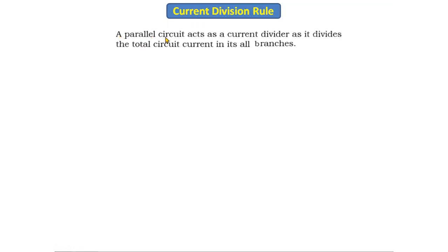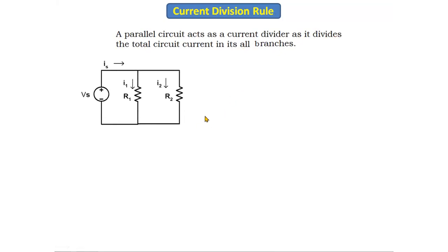Hello everyone, today we are going to discuss the current division rule. This rule is used to find out the currents which are dividing in a circuit. A parallel circuit acts as a current divider, as it divides the total circuit current in all its branches. We will find out these dividing currents using the current division rule.